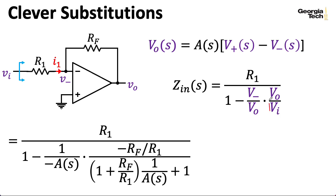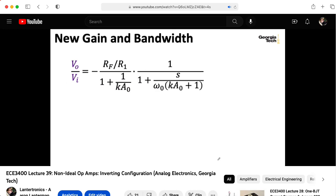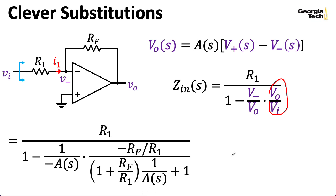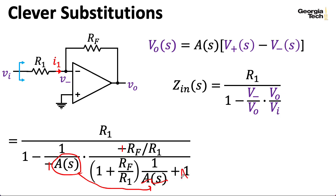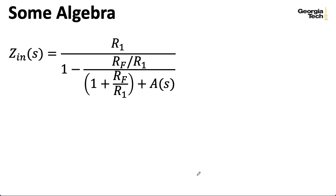Now let's also consider VO over VI. That was the big complicated derivation we did in the last lecture. If you go check out the last lecture, you'll find that one of our expressions for VO over VI looks like the one shown here. The negative here will cancel with that negative there. I can take this A(s) and multiply it through, so that A(s) will go away and I'll wind up with an A(s) in another spot. Let's take that expression and copy it onto the next slide.